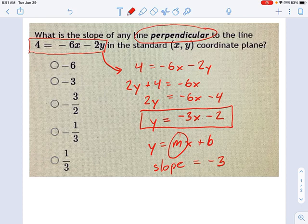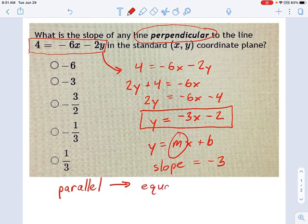Now, when we talk about a line perpendicular to this one, let's remind ourselves of two concepts. Parallel means equal slope. If two lines are parallel, then that means they have the same slope as each other. But perpendicular means something very different.